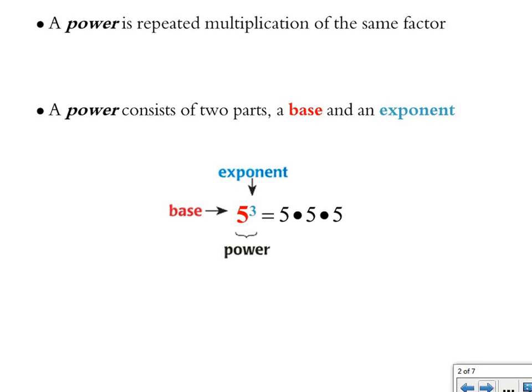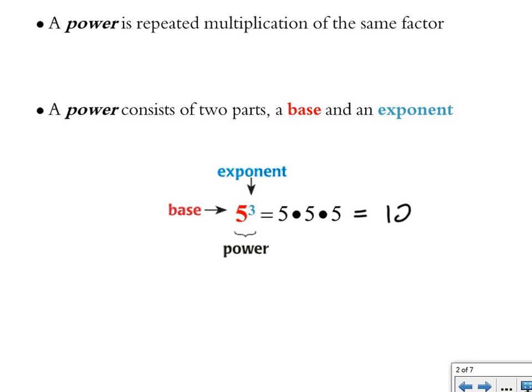What it means is repeated multiplication of 5 three times. The exponent tells us how many times we're going to multiply our base by itself. So 5 to the third power means 5 times 5 times 5. 5 times 5 is 25, times 5 again is 125. So 5 to the third power equals 125 — it's a shorthand way of showing repeated multiplication.